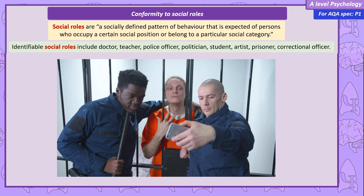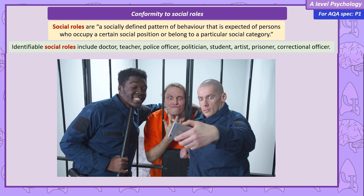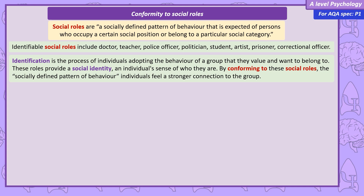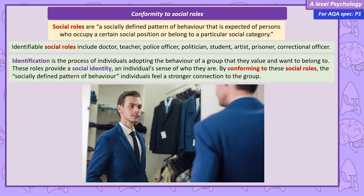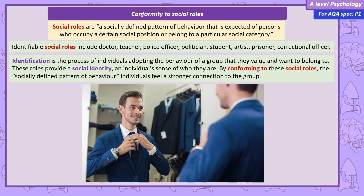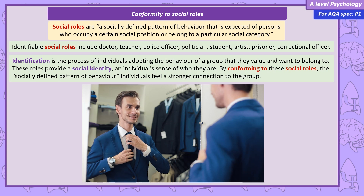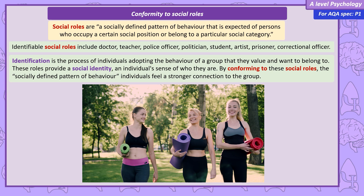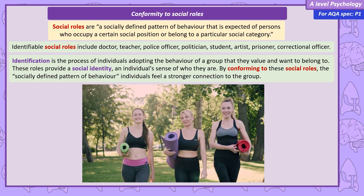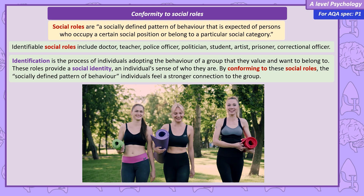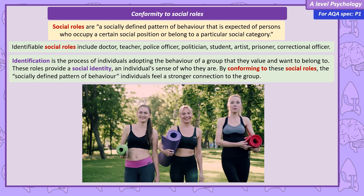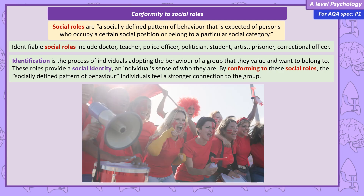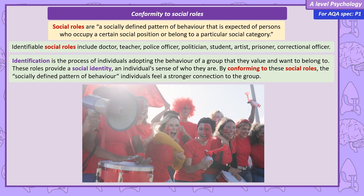Not all people in those roles act this way, but they are the stereotypical mental images we have when considering those roles. In the previous video, we discussed three types of conformity. The identification type of conformity is where membership of a group is valued, and even if we don't privately agree with the beliefs and behaviours of the group, we adopt them publicly to feel part of the group. People like to have a sense of social identity, and by conforming to the socially defined pattern of behaviours linked to a social role, we can define ourselves as members.